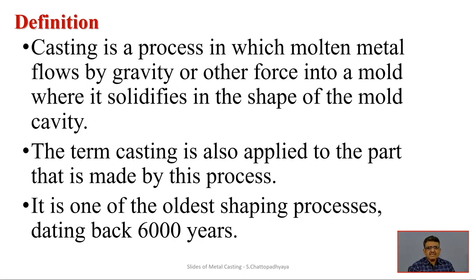The term casting is also applied to the part that is made by this process, so the product is also called a casting. It is one of the oldest shaping processes, dating back even 6,000 years. The initial materials used were gold, then copper and bronze. Even before 6,000 years, human civilizations were well aware that if metals are melted above the melting point they become fluid, and if cast in different cavities we can get complex contoured products that are not easy to machine.